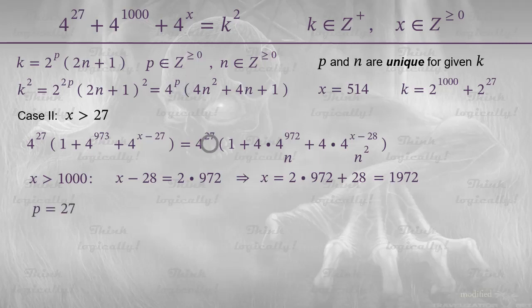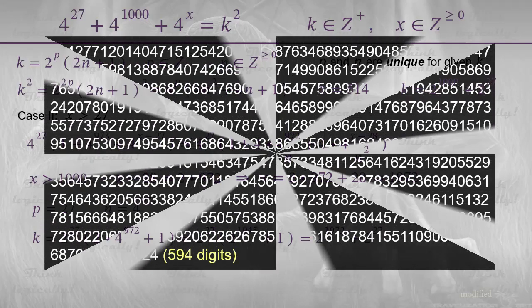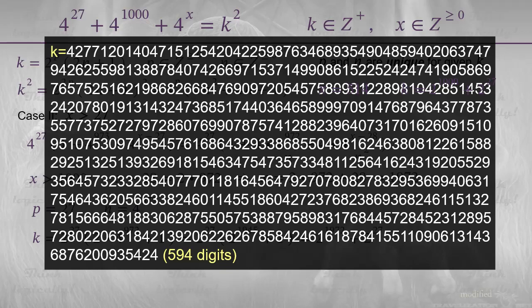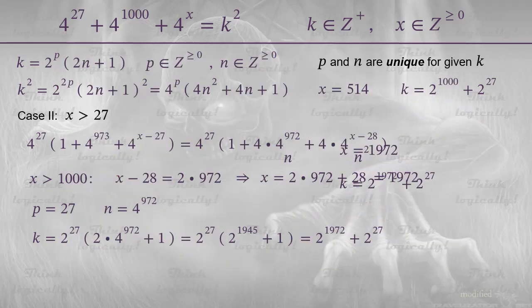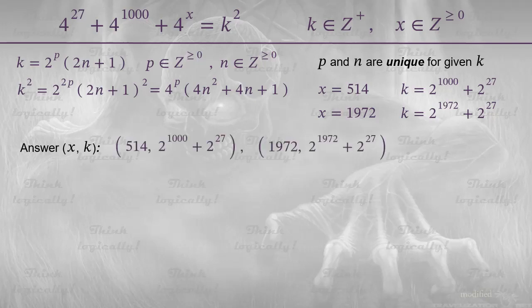Again, p equals 27. However, n this time equals 4 to the power of 972. And again, we use the expression for k. And find that this time k equals 2 to the power of 1972 plus 2 to the power of 27. This time k has 1973 binary digits and 594 decimal digits. And again, we copy the answer to the top and clear the page. Because now we can write the answer to the whole problem. It consists of two pairs of x and k.